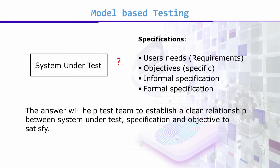A specification shows user needs, requirements, and objectives. They can be informal or they can be formal specifications. We have to see model specifications. If we treat a model specification, the system under test — what is the relationship? The answer will help our test team to establish a clear relationship between the system under test, the specification, and the objectives we want to satisfy. Whether it is a specification or a model like a finite state machine, we must see what our requirement is, what our objective is, and what we have to treat as a model.